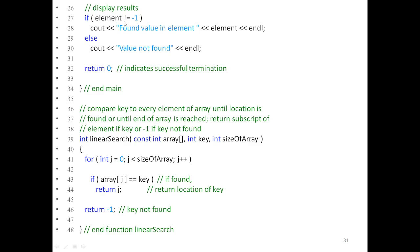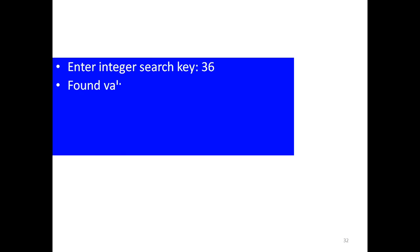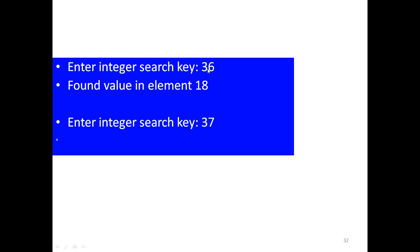After calling linear search, if the result is not equal to -1, it means the value was found, and you output the index position. Otherwise, print 'not found.' For example, if you type 36, it's found at position 18. If you type 37, since 37 doesn't exist in the array, it prints 'not found.' In the worst case, linear search must compare all n elements.